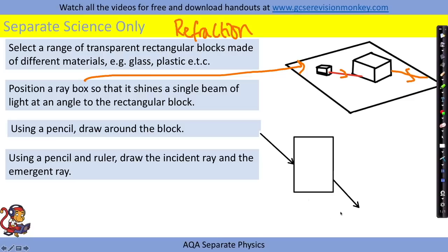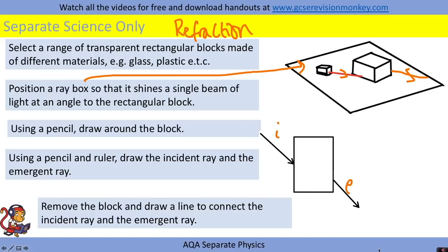The outline of the block with the incident ray and the emergent ray that comes out of the block. We then remove the block and draw a line to connect the incident ray and the emergent ray which is shown in this diagram here.